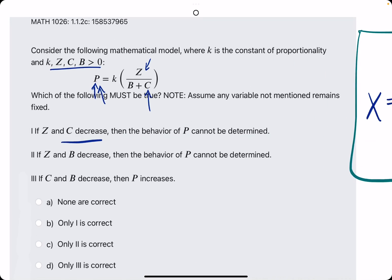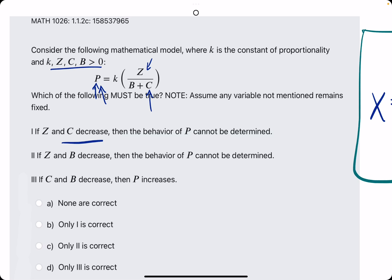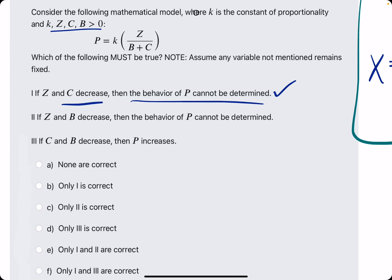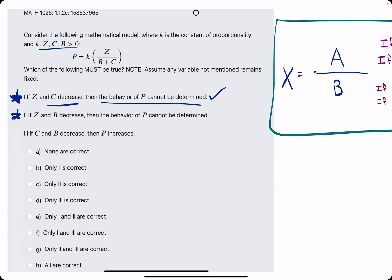And so it's hard to tell exactly how P will change because we don't know by how much C and Z are decreasing. So the behavior of P cannot be determined should be a true statement because we can't tell. We just don't know by how much they are decreasing. So that should be a true statement. Let's move on to number two. Number one is true.